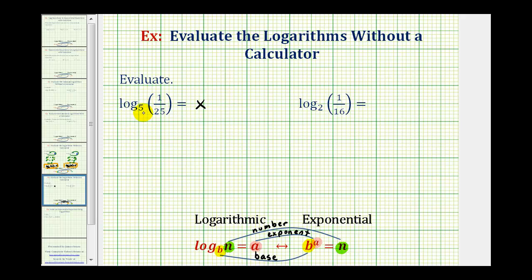What I mean by that is we'll start with our base five. Five to the power of x must equal one twenty-fifth. So five to the power of x must equal one over twenty-five.